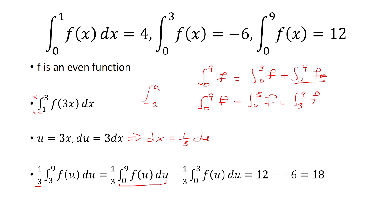Now, 0 to 9 f of u du is just, again, 0 to 9 f of x dx. It doesn't really matter what letter I have here, or variable. That is 12. So we have 1 third times 12, minus 1 third. 0 to 3 is negative 6. So this one we have to divide by 3, which will give us 6 as our final answer.